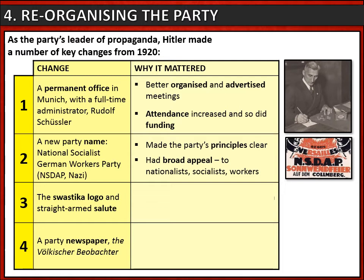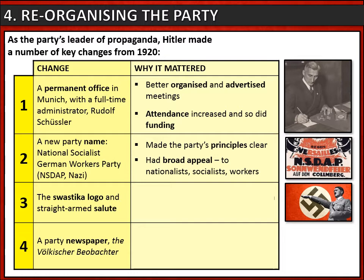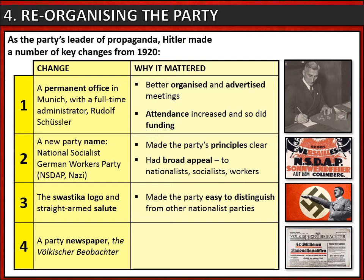Hitler introduced a swastika logo and a straight-armed salute, making the party instantly recognizable and easy to distinguish from other nationalist parties. Using their new funding, the party bought a newspaper — the Völkische Beobachter or People's Observer — enabling the party to spread its propaganda messages to a wider audience.